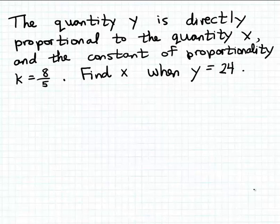Okay, our next example of direct proportion functions is very similar to previous examples. Here we're told the quantity y is directly proportional to the quantity x, and the constant of proportionality k is 8/5, and we want to find x when y is 24.